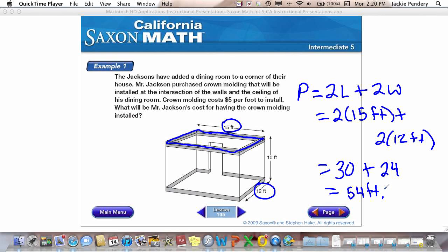So there's step one, you are not done. The question asks, what will be Mr. Jackson's cost for having the crown molding installed? Okay, well, crown molding is $5 per foot. So now that I know my perimeter is 54 feet, now I need to multiply that. 54 feet times $5 per foot. And so my cost to have it installed will be $270. So $270 is the answer to my problem. So this is a two part problem. You will need to make sure that in between your first calculations over here and finishing the problem that you go back and reread the problem.